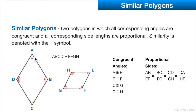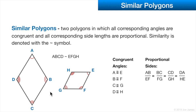With two polygons shown here, we can see that all four angles — A and E, B and F, and so on — are congruent with the corresponding angles in the other shape. We can see that the two polygons are different sizes, and one is rotated.